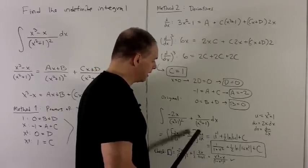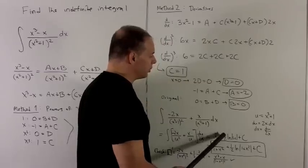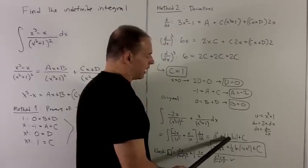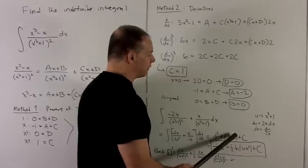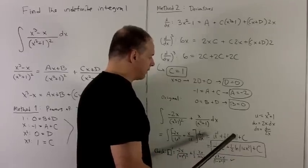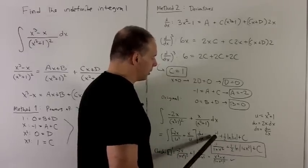Then here we have a one half du over u. But du over u is going to integrate up to natural log absolute value of u. And then we have the half out in front. And so when I put my u's back in, we'll have 1 over 1 plus x squared plus a half natural log absolute value of 1 plus x squared.